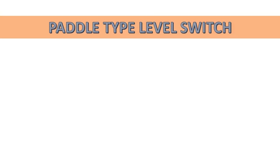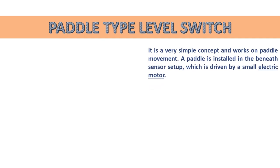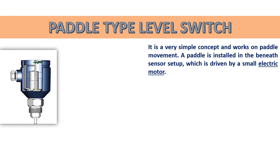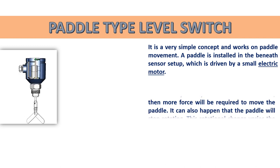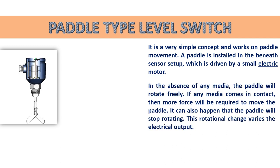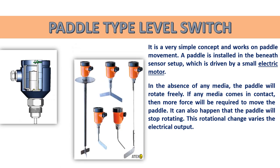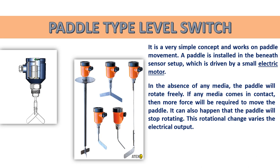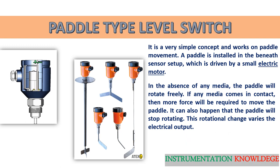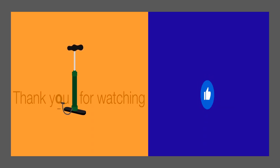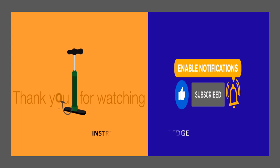Last but not least, the paddle type level switch is a very simple concept working on paddle movement. A paddle is installed in the sensor setup beneath, driven by a small electric motor. In the absence of any media, the paddle rotates freely. If any media comes in contact, more force is required to move the paddle, and it may even stop rotating. This rotational change varies the electrical output. If you enjoyed this video, kindly subscribe to the channel Instrumentation Knowledge.